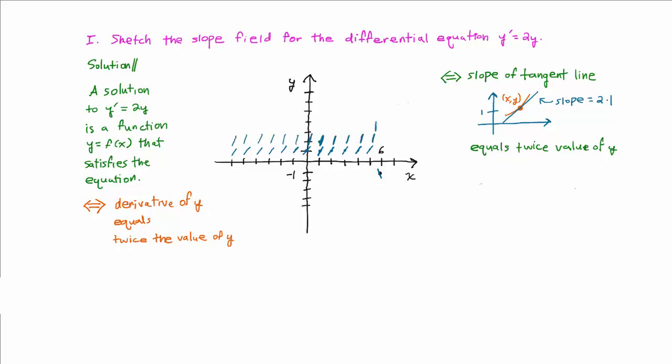If we continue in this way, we see that each time we move up, the slope gets steeper. Now let's consider points on the x axis. For example, at the point 0, 0, the y coordinate is 0, and therefore the slope is 2 times 0, which is 0, and we get a horizontal line segment.